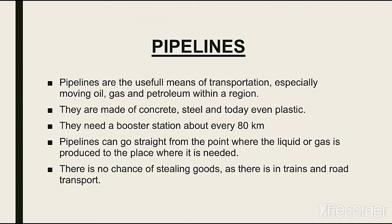Pipelines تیسرا mean of transport ہے، جو آج کی سب سے ضروری چیزوں میں سے ہے۔ Pipelines کے ذریعے liquids یا gas کو منتقل کیا جاتا ہے: گھروں میں پانی پہنچانا، gas کی فراہمی، oil کی movement - یہ ساری چیزیں pipelines کے ذریعے transport کی جاتی ہیں۔ اس کی تعمیر بھی roads اور railways کی طرح مہنگی ضرور ہے۔